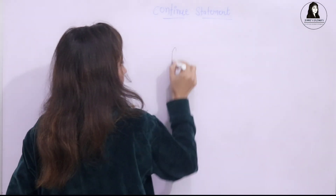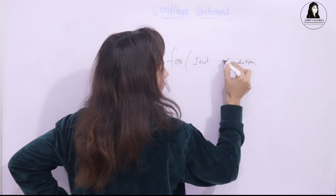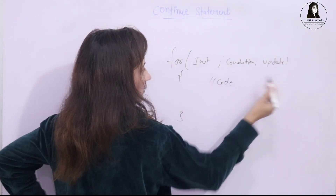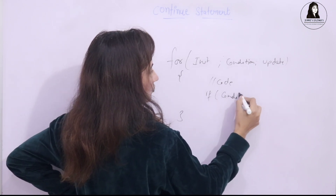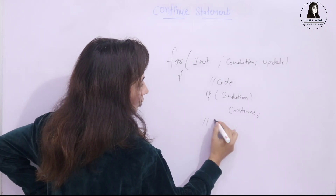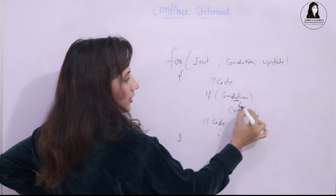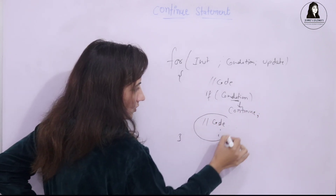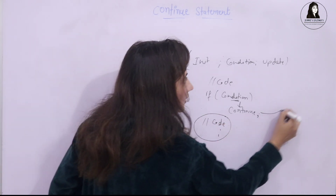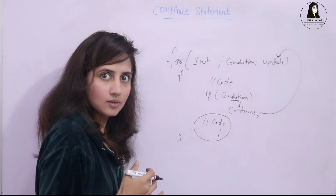We can use continue with all loops: for, while, do-while, and range-based for loop. In a for loop, the syntax has initialization, condition, and update. Suppose we have some code and within it a condition to check. If that condition is true, we use continue. Whatever statements are written after continue within the loop would be skipped and not executed. Control will directly go to the update step, then the condition is checked, and so on for the next iteration.